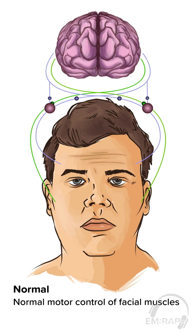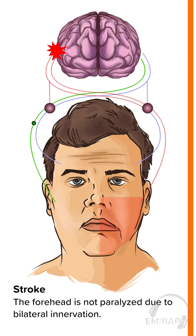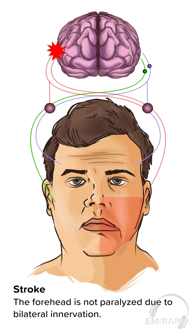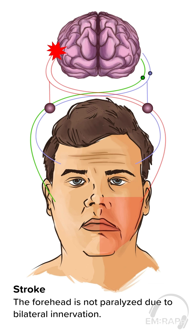Now let's compare a stroke versus bell palsy. In a stroke, the forehead is not paralyzed, and this is due to bilateral innervation of the frontalis muscle which controls the forehead, and the orbicularis oculi which causes the eye to squint closed. Even though one side of the brain is affected, the other side also provides innervation to these muscles.